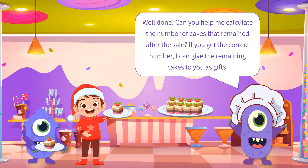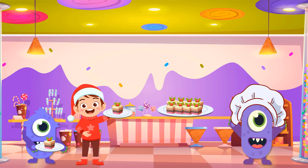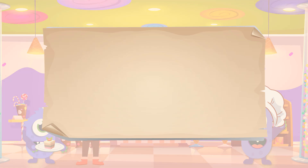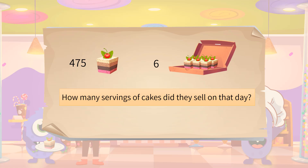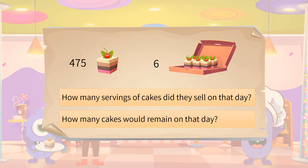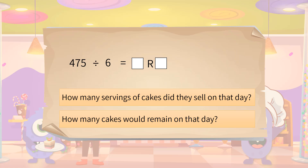The chef told Timmy the bakery of the student center baked 475 cakes on that day, and they were selling cakes in a serving of half dozen — six pieces. The chef would like to know how many servings of cakes they sold on that day and how many cakes would remain. To find these numbers, we need to find the quotient and remainder in the equation 475 divided by 6. The number of servings of cakes is the quotient, while the number of cakes remaining is the remainder.